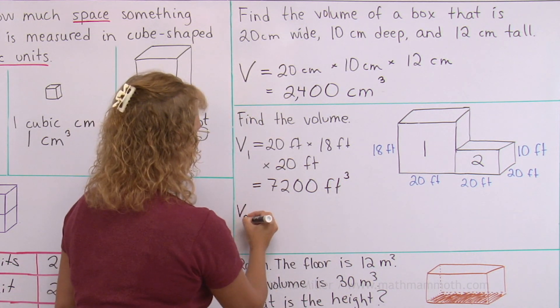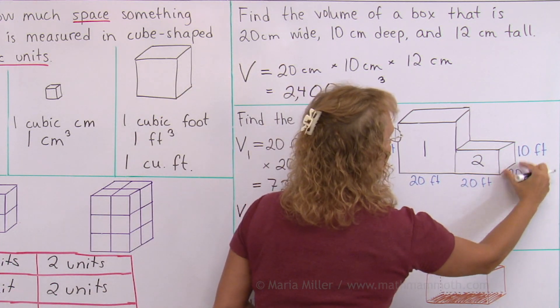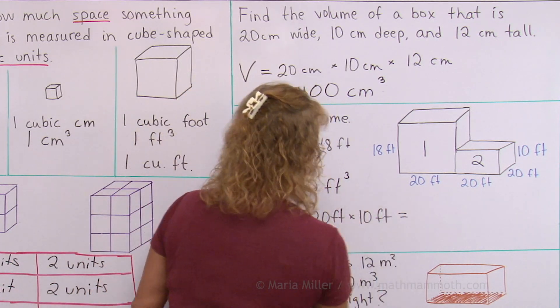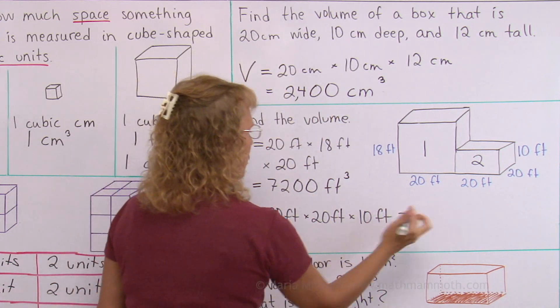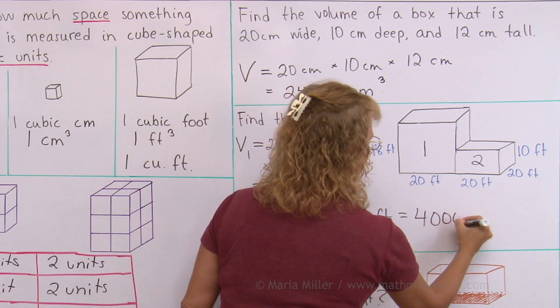And then the second one, this one here, has 20 feet times 20 feet times 10. So that's four, zero, zero, zero, four thousand.